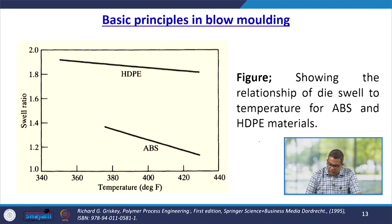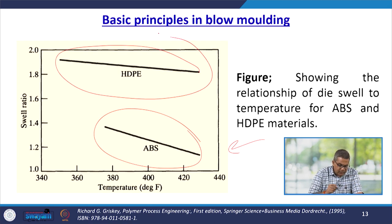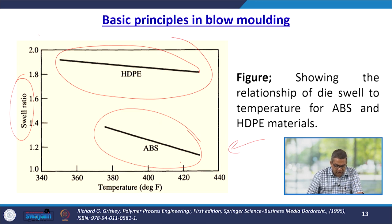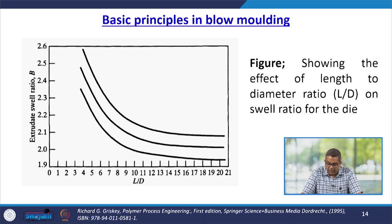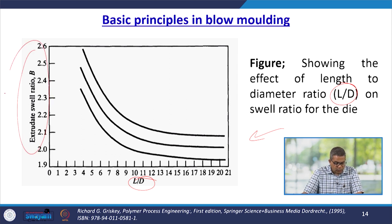A graph shows the relationship of die swell to temperature for ABS and HDPE materials, with swell ratio on one axis and temperature on the other. As temperature increases, the swell ratio for ABS decreases more sharply than for HDPE — the slope for HDPE is less steep. Another figure shows the effect of the length-to-diameter (L/D) ratio on the swell ratio for different polymers.